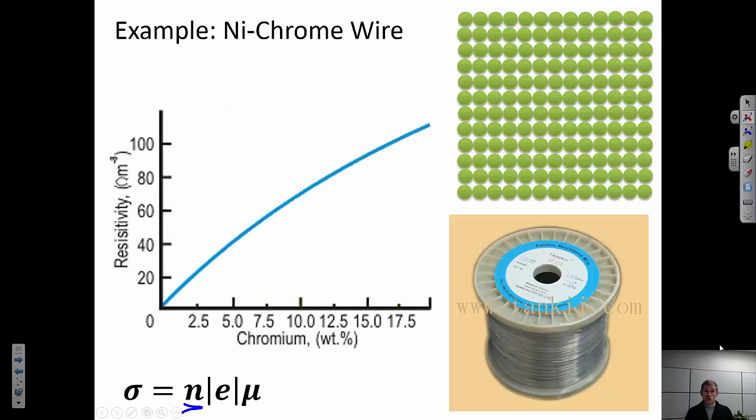When I talk about doping or conductivity in alloys, that's exactly what happens. We're going to think about an example, nichrome wire. This is a metal wire that's oftentimes used for resistive heating. And it's nice because we can control the resistivity very easily by controlling the percent of chromium in the system.